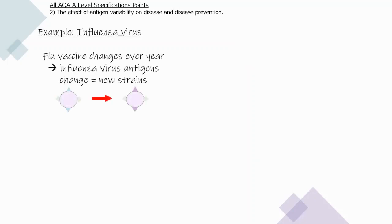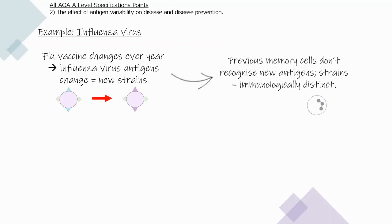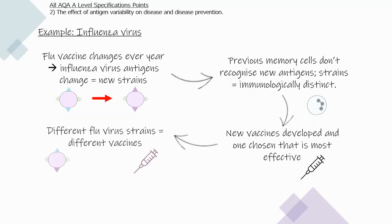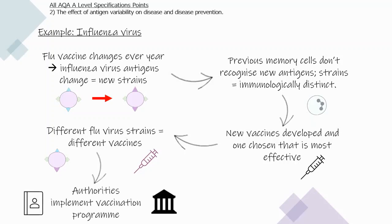An example of antigen variability in practice is the influenza virus. The flu vaccine has to change every year because the antigens on the influenza virus change, producing new strains. The previous memory cells no longer recognise the new antigens, and the strains are immunologically distinct. Therefore, a new vaccine has to be developed each year, and health authorities implement an appropriate vaccination programme.